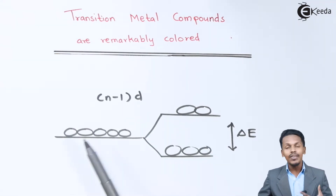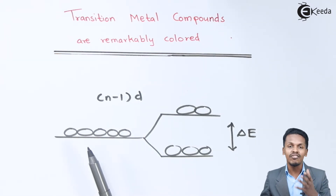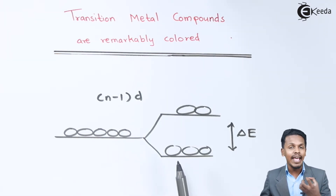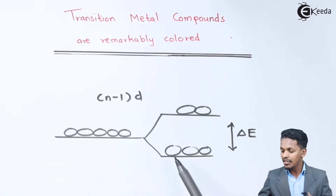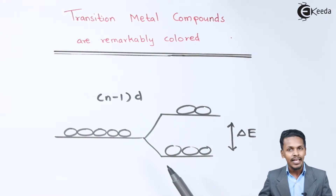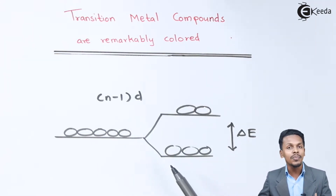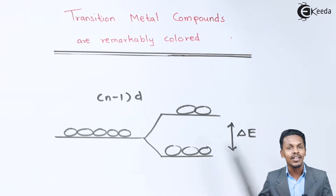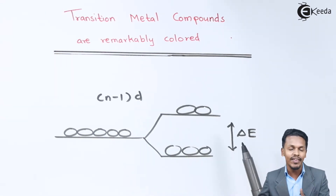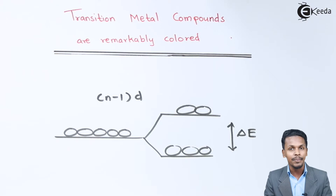Whenever a transition metal absorbs a particular wavelength, one electron gets transferred to the upper energy level and then comes back again. When the electron returns to its original position, it imparts a color through a wavelength, and that is the reason transition metal compounds are remarkably colored.